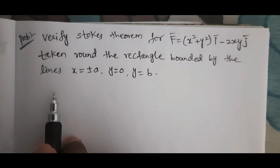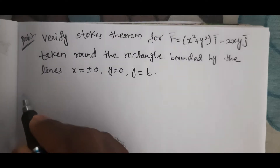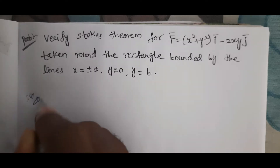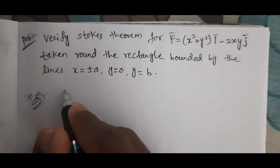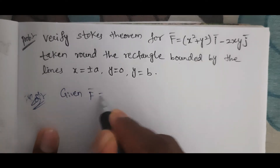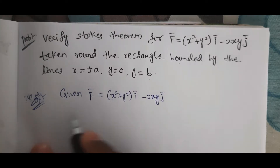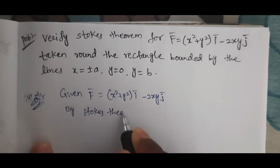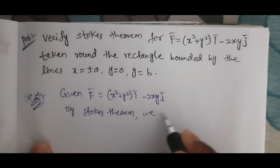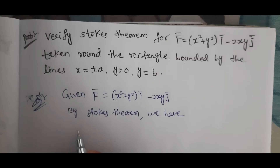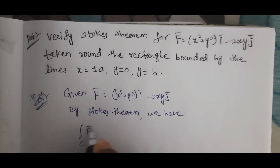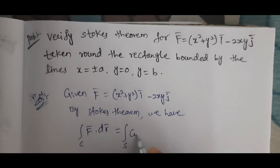Here we have to verify Stokes theorem — evaluate both LHS and RHS. Given F̄ = (x² + y²)ī − 2xy j̄. By Stokes theorem, we have ∮_C F̄·dR̄ = ∬_S (curl F̄)·n̄ dS.